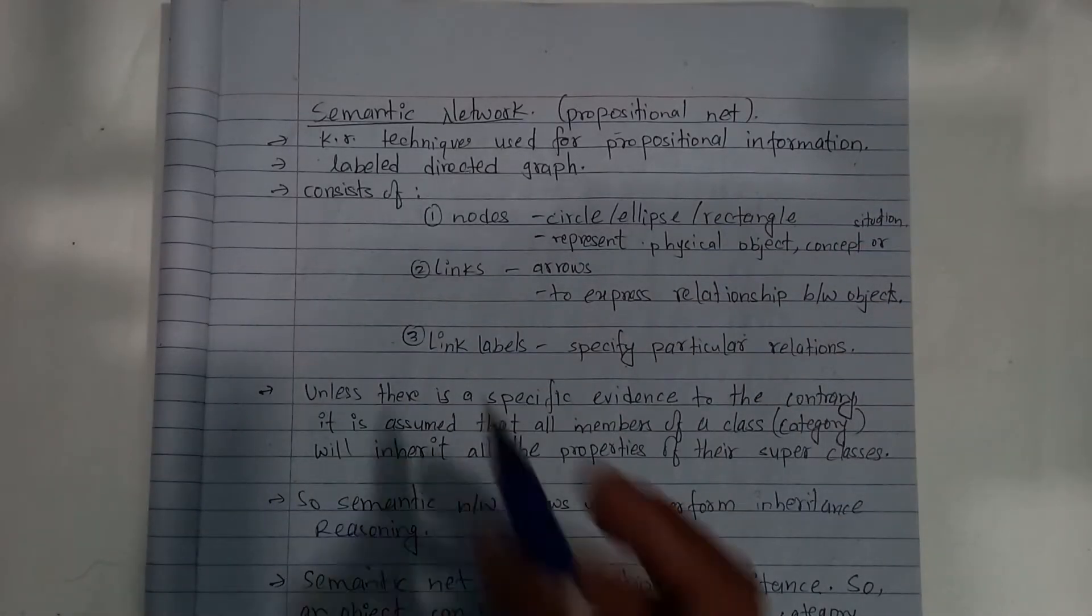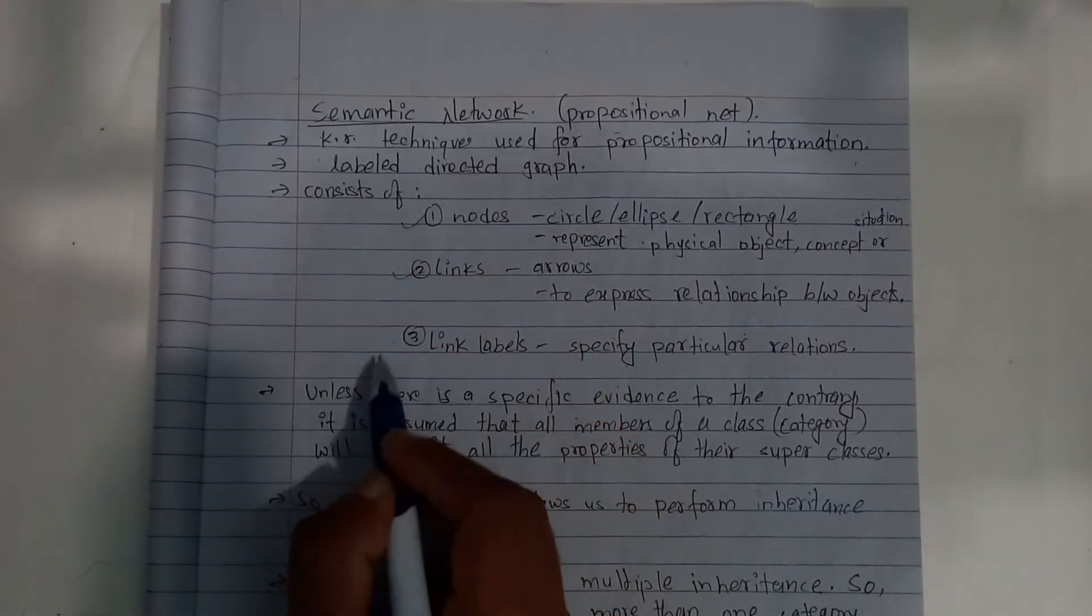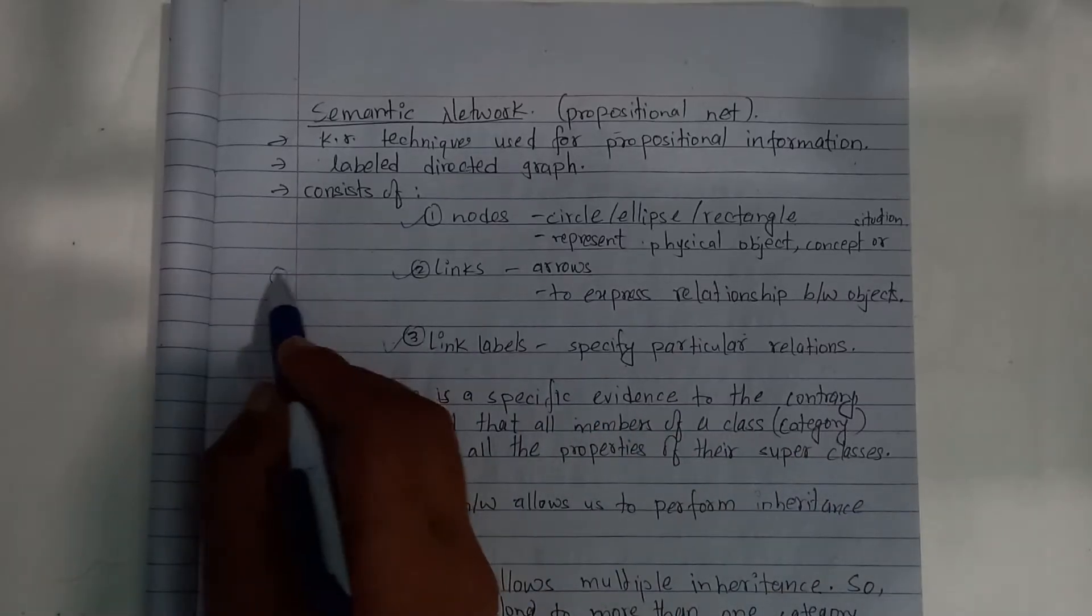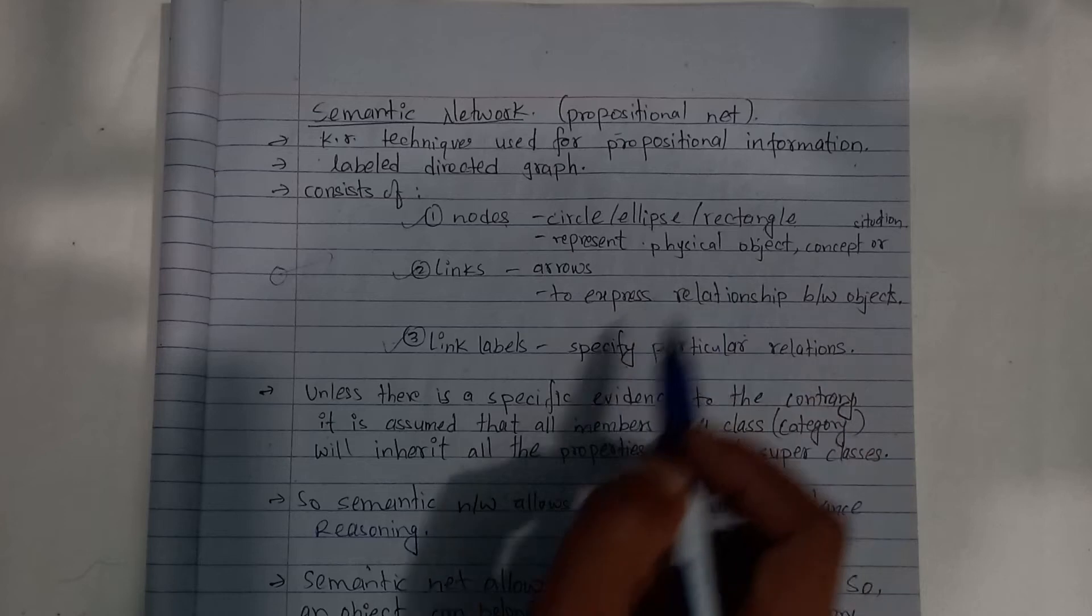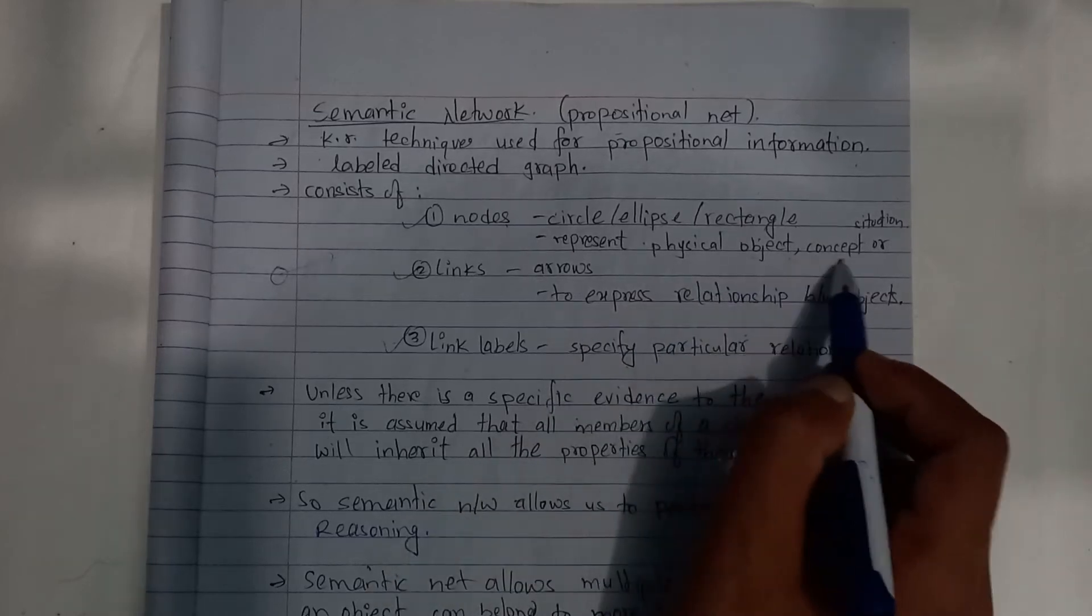It's a labeled directed graph consisting of nodes, links, and link labels. Nodes are circles, ellipses, or rectangles that represent physical objects, concepts, or situations.